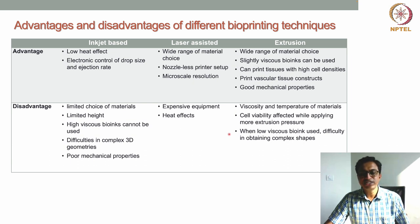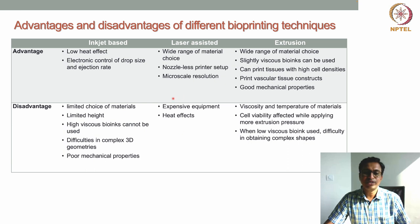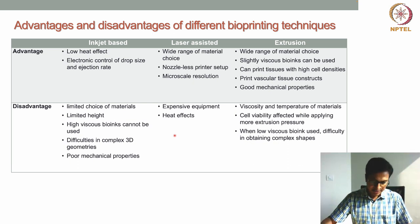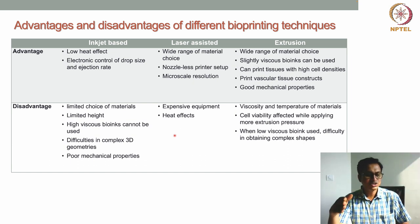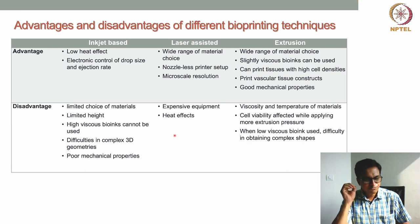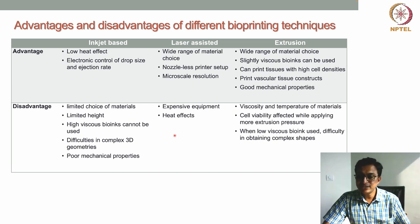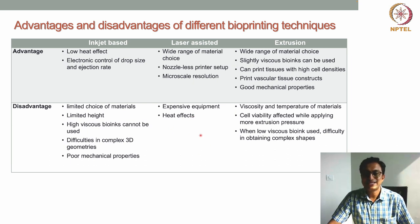For laser-assisted bioprinting, the major disadvantage is that the equipment is very expensive and not very affordable. Heat effects are another disadvantage — the laser strikes the metal layer, which heats up tremendously for a fraction of time, and that heat can dissipate to the bioink, potentially having a detrimental effect on the cells.